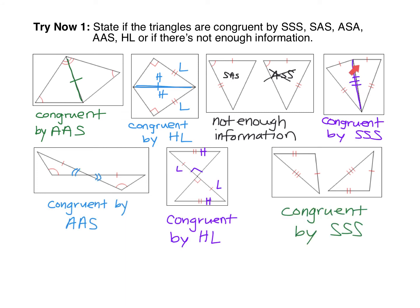Here are the answers. The first has a shared side down the middle — marking it shows three sides of one triangle congruent to three sides of the other: SSS. The next one has a pair of vertical angles; after marking those, we have two angles and a non-included side, so it's AAS. The third has a 90-degree angle that is vertical with the other triangle's angle, making that also 90 degrees — and there's both a hypotenuse and a leg, so it's HL. The last set has three pairs of congruent sides: SSS.